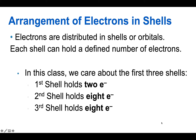In this class, we only care about the first three shells, and each shell holds a defined number of electrons. The first shell, which is closest to the nucleus, holds up to two electrons.